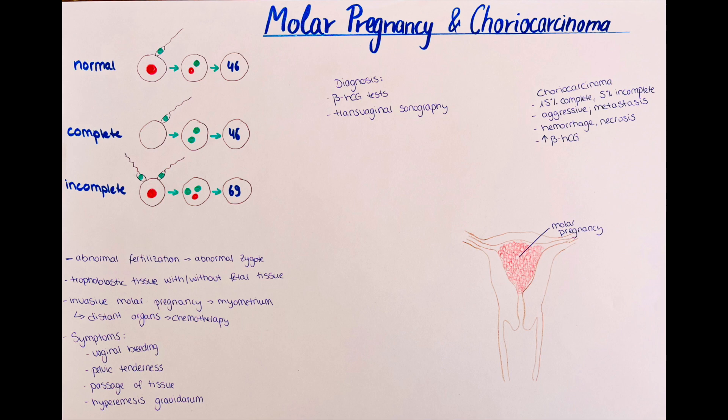We can divide molar pregnancy into two main types: the complete molar pregnancy and the incomplete molar pregnancy. In a complete molar pregnancy, there is a genetically empty ovum which is fertilized by one spermatocyte. As the cell aims to form a normal 46-chromosome zygote, the genetic information of the spermatocyte is duplicated, but the zygote only contains genetic information from the father, so no fetus forms.